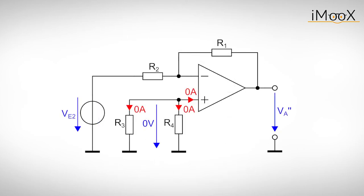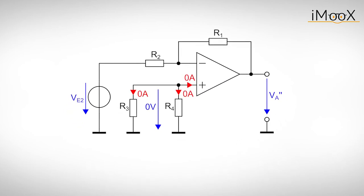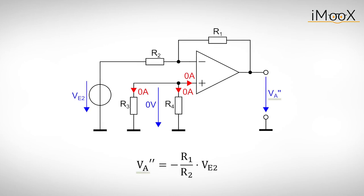Now we go for the second input voltage Ve2 and redraw the circuit. This is an inverting amplifier with additional resistors at the non-inverting input. As our rules state that there is no current flowing into the input of the operational amplifier, there is also no current flowing through the resistors. Consequently, the voltage drop over them and the potential at the non-inverting input is zero volts. This means this circuit behaves like an inverting amplifier and we can write the second output voltage Va''.